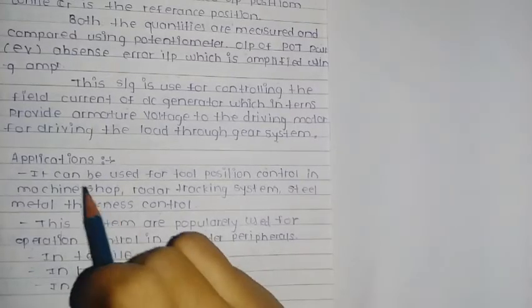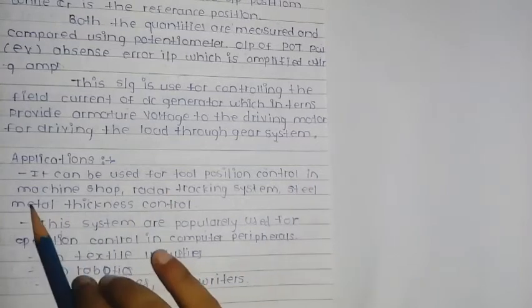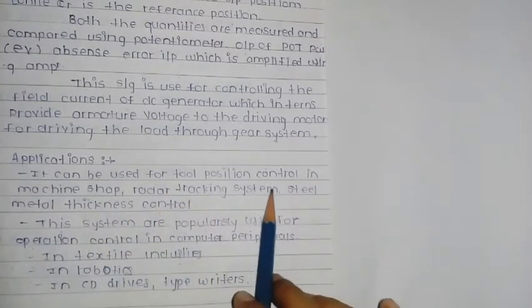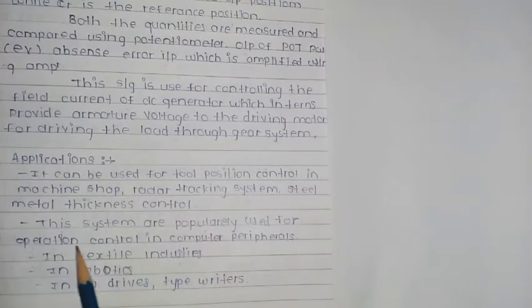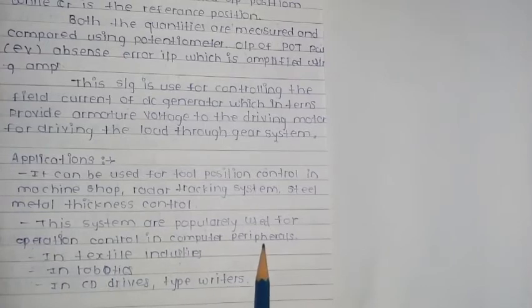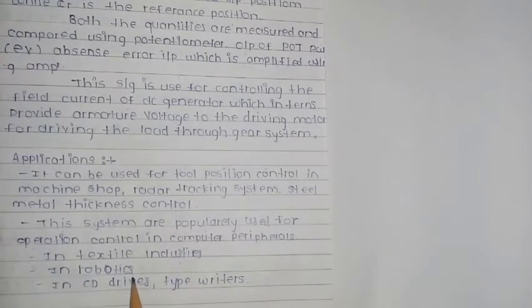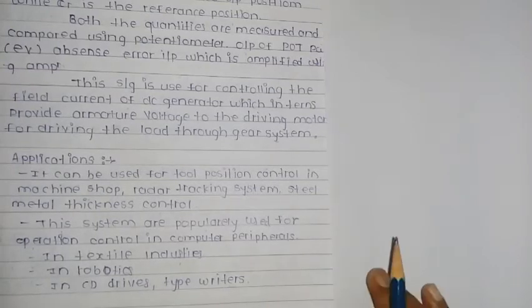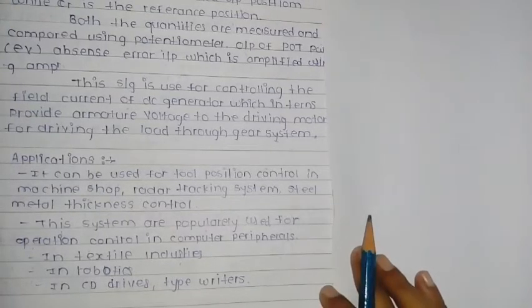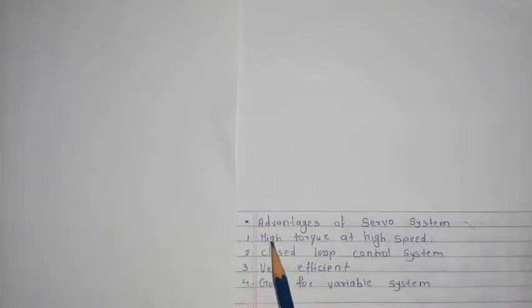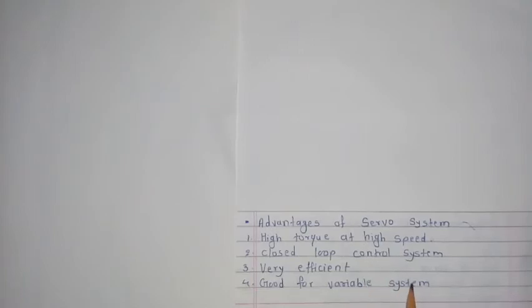Applications: tool position control in a machine shop, radar tracking system, steel metal thickness control. It is popularly used for operation control in computer peripherals, textile industry, robotics, CD drives, and typewriters. Advantages: high torque at high speed, closed loop control system, very efficient, and good for variable systems. Today's topic ends here. Thank you.